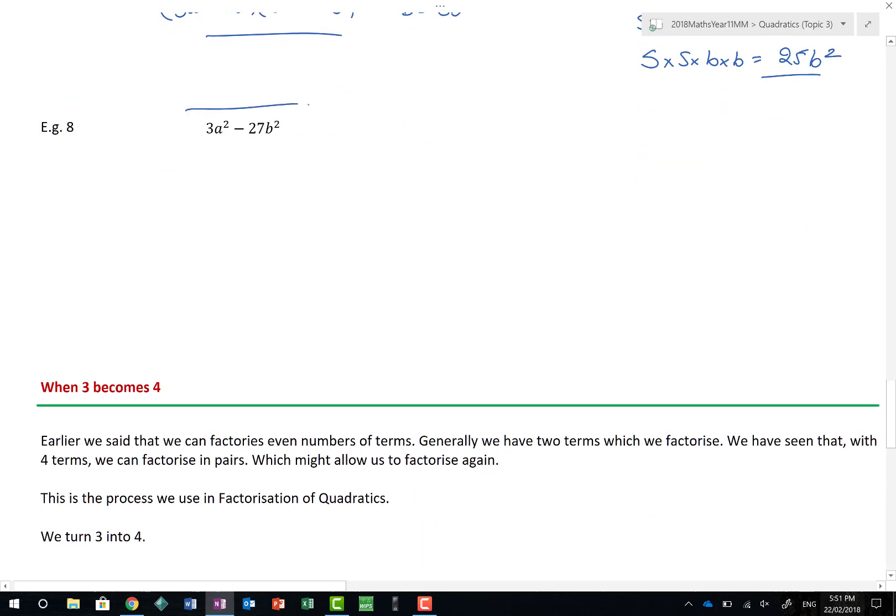What about this situation here? Neither 3 or 27 are square numbers. But if I actually take 3 outside of a set of brackets, I get a squared minus 9b squared. And lo and behold, now I do. Because I have 3a squared minus 3b squared. I have a squared term minus a squared term. As long as we keep those in brackets outside, I get 3a minus 3b, a plus 3b. I can get rid of my square brackets now to give me 3 brackets a minus 3b a plus 3b.